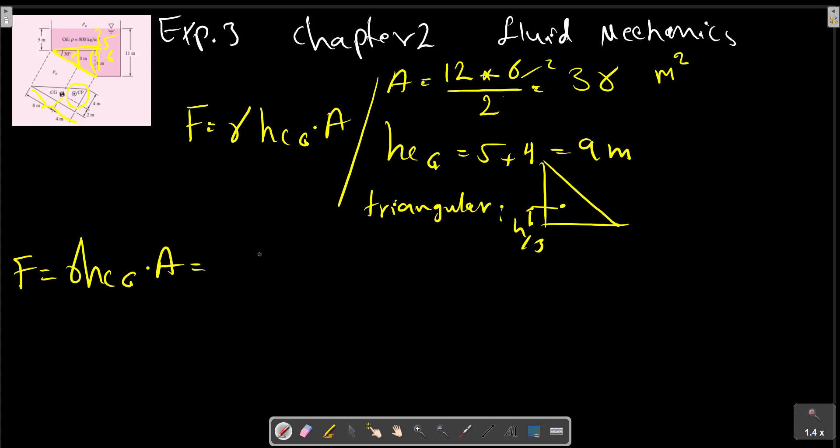HCG multiplied by A, 36. So, F equals... we got here.